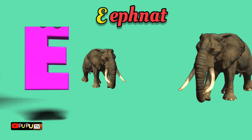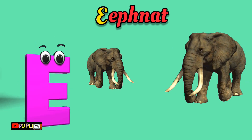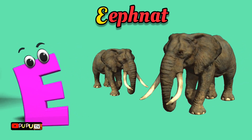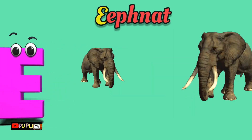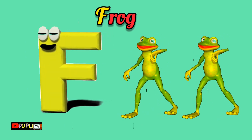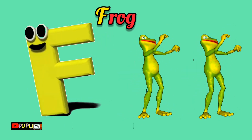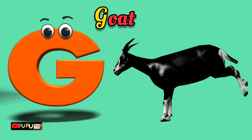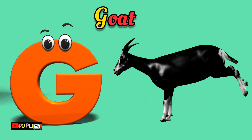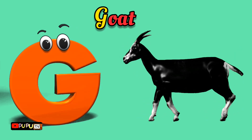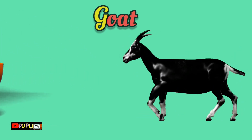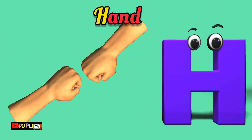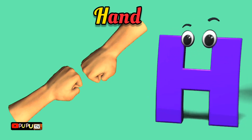E is for Elephant, E-E-Elephant. F is for Frog, F-F-Frog. G is for Goat, G-G-Goat. H is for Hand, H-H-Hand.